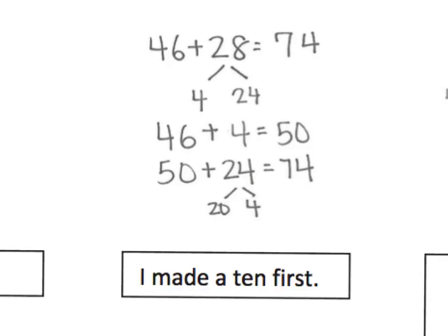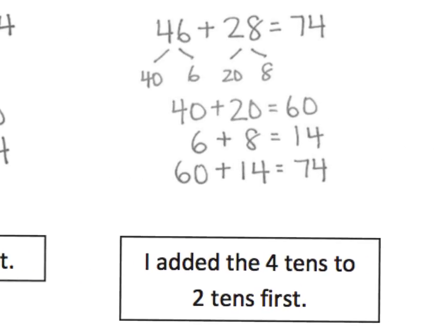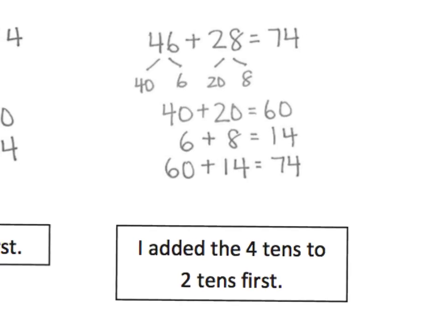And then another strategy, and this is not the last. There's other strategies as well. This strategy is decompose both numbers and add the tens together, add the ones together, and then combine them. There's other methods. We could use quick tens.